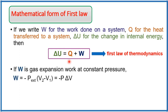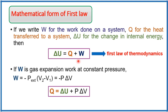If W here is the gas expansion work at constant pressure, then in expansion work W can be written as −P_external × ΔV. Substituting this into the equation and rearranging, we get: Q = ΔU + PΔV. This is another mathematical form of the first law.